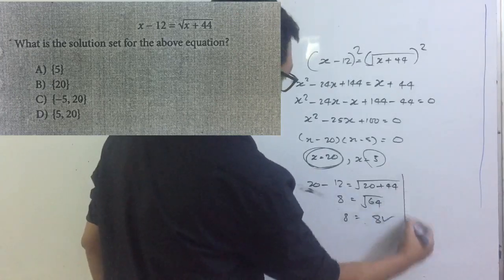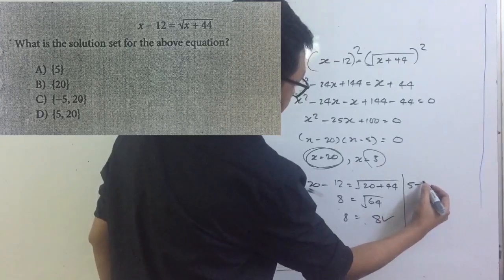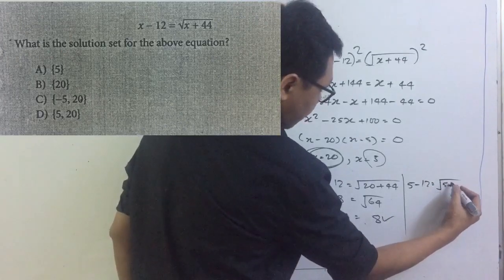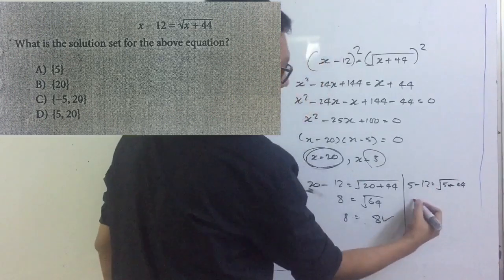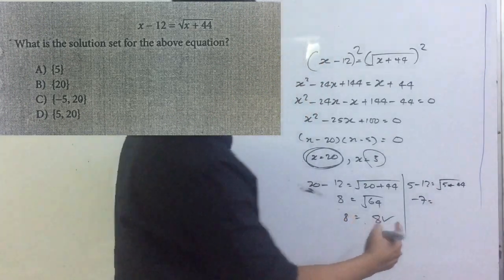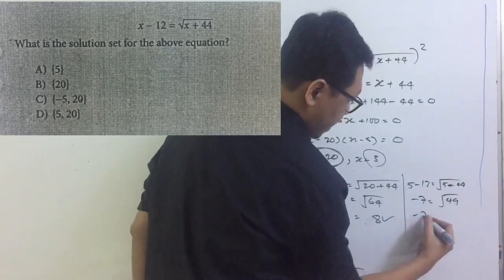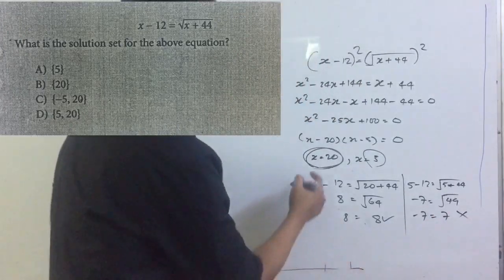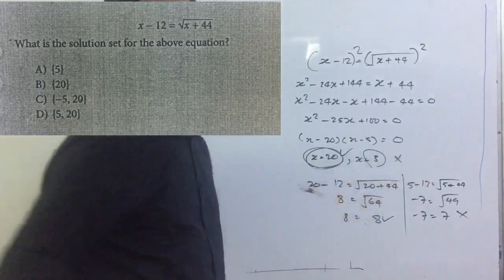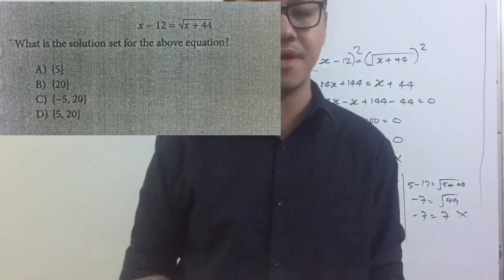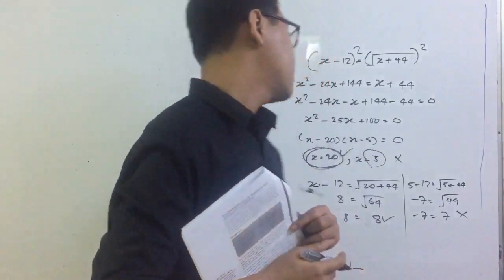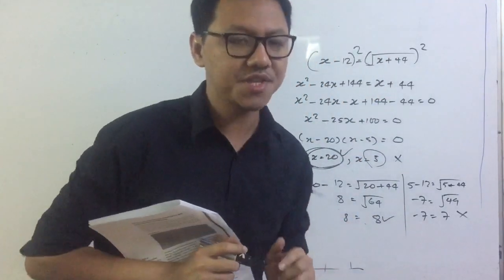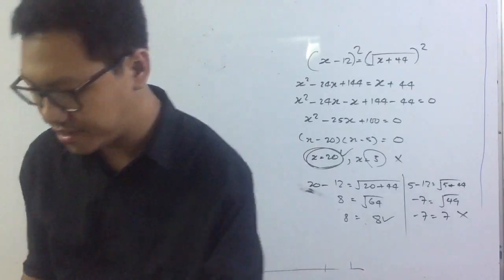Now let's check x equals 5: 5 minus 12 equals the square root of 5 plus 44. This gives us minus 7 equals the square root of 49, which is 7. So minus 7 equals 7 — this is wrong. So the correct solution is x equals 20 only. In solving square root equations, you always have to check for the extraneous solution.